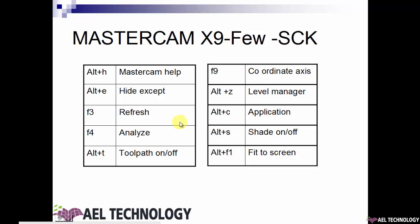When you press Alt+E, you can select the geometry or part you want to keep on the screen — everything else will be hidden. When you want to refresh the screen, press the function key F3. And when you want to analyze any particular geometry, curve, or line, press the function key F4.